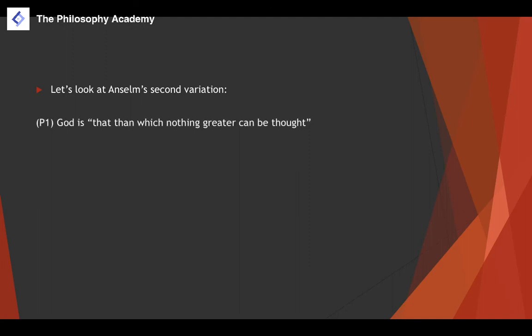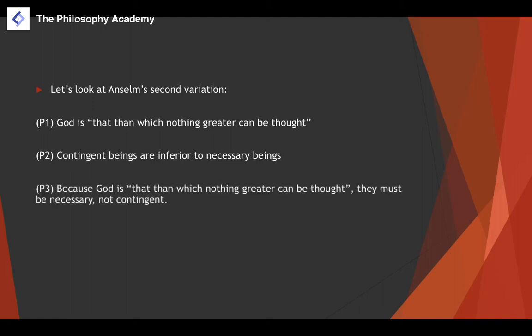Formulating Anselm's second ontological argument: Premise one — God is that than which nothing greater can be thought. Premise two — contingent beings are inferior to necessary beings. Premise three — because God is that than which nothing greater can be thought, he must be necessary and cannot be contingent. If God were contingent, I could conceive of a better God — a necessary one — so God must be necessary.